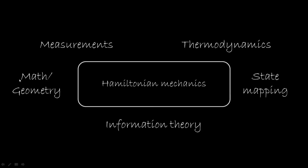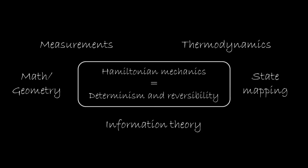First, we're going to look at the math and the geometrical interpretation of that math. Then we're going to look at it in terms of physical measurements, then in terms of thermodynamics, in terms of information theory, and in terms of state definition and state mapping. What we're going to see is that Hamiltonian mechanics coincides with assuming deterministic and reversible evolution.